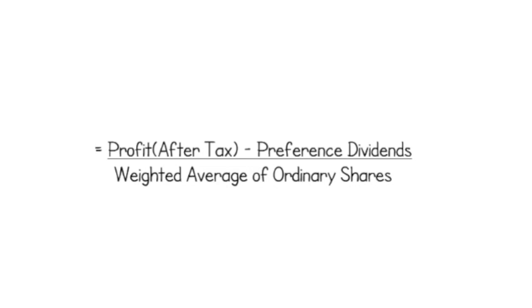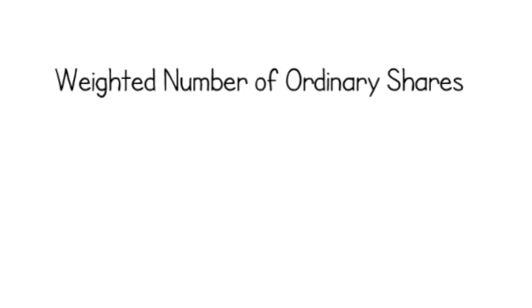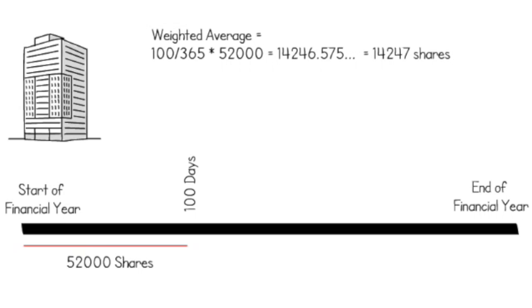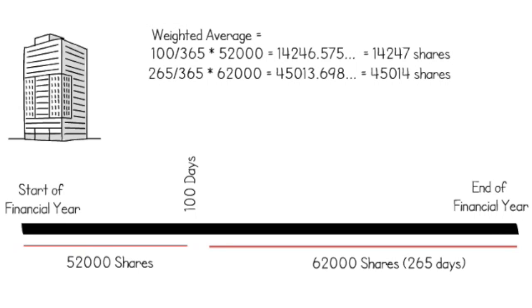The earnings per share ratio is expressed as the profit after tax, less preference dividends, over the weighted average number of ordinary shares. The weighted number of ordinary shares considers the average number of ordinary shares over the financial period. For example, if a company had 52,000 shares for the first 100 days of the year and had an additional share issue, increasing the total shares to 62,000 shares for the remainder 265 days of the year, the weighted average is 59,260 shares.